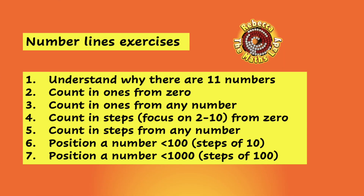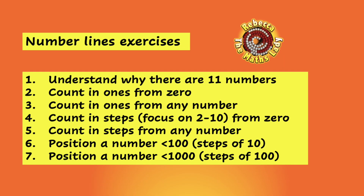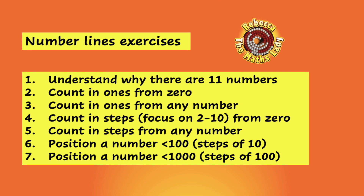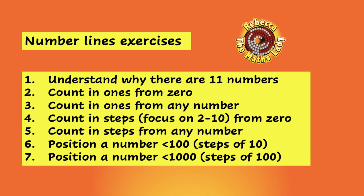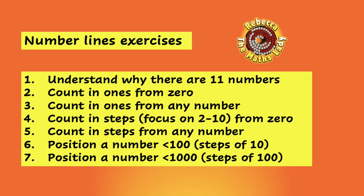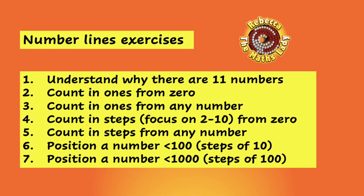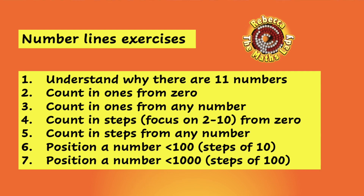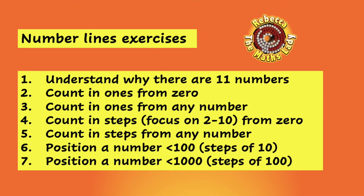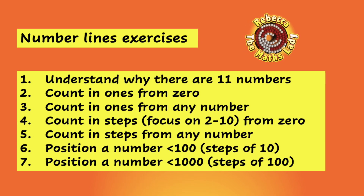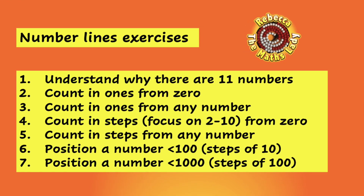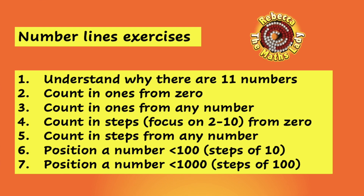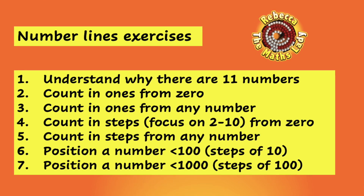So here are the exercises to do with the number line with your child at this stage. Some of them, once your child has got them, they've truly got them — and that's true of understanding the number line, understanding that the numbers mean 'how many so far', so there are 11 numbers because you need a starting point as well as 10 other numbers on the number line, and also positioning numbers on the number line.